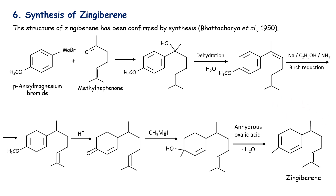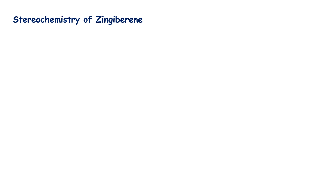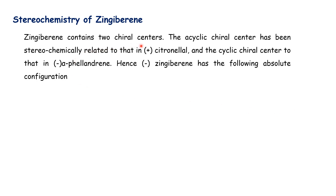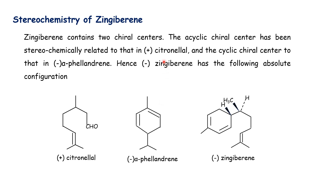The structure of gingivirine is confirmed by synthesis. Regarding stereochemistry, gingivirine contains two chiral centers. The acyclic chiral center has been stereochemically related to dextro-citronellol, and the cyclic chiral center to alpha-phellandrene. Therefore, levo-gingivirine has the absolute configuration corresponding to levo-rotatory gingivirine.